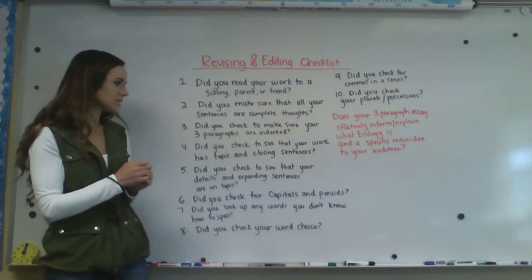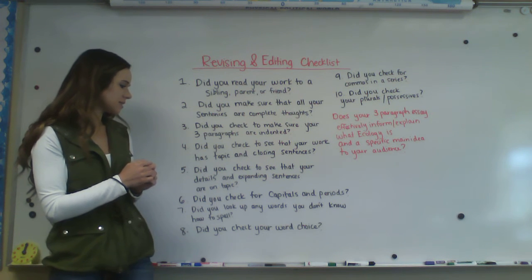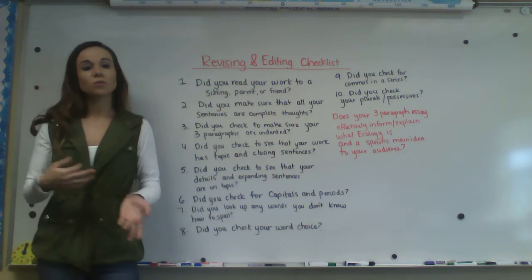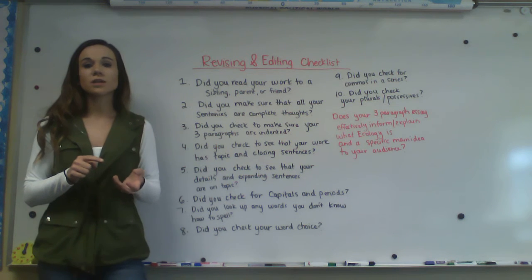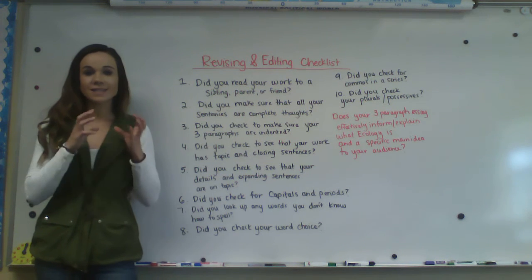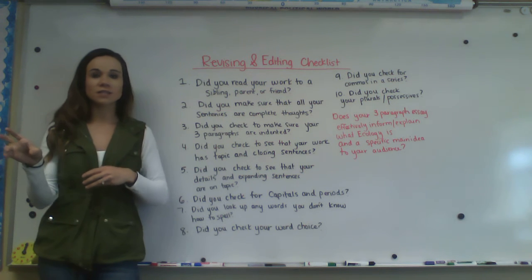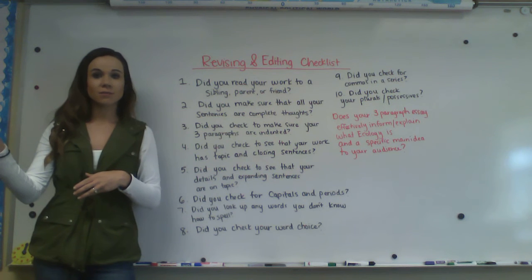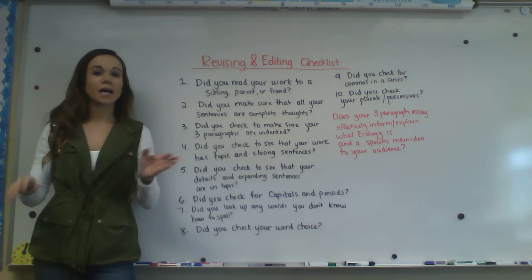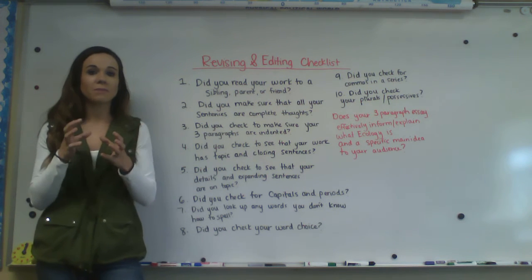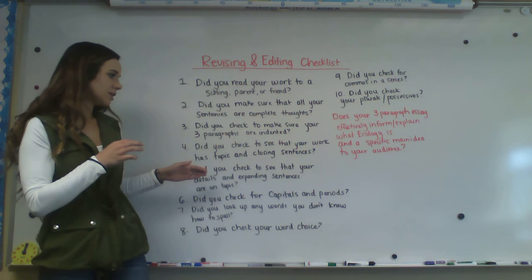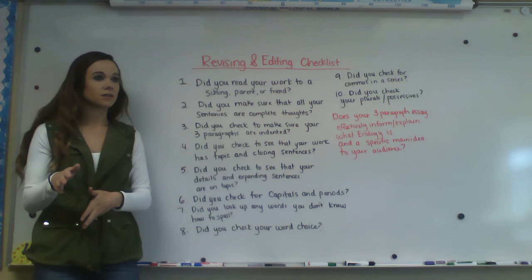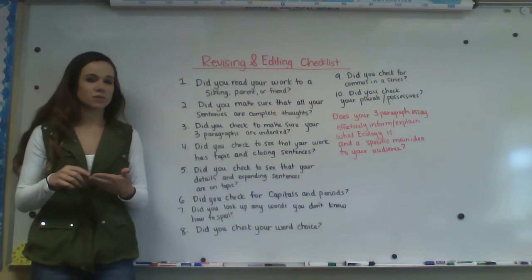Number five: did you check to see that your details and expanding sentences are on topic? For example, I wrote about the roles of consumers, decomposers, and producers. I stayed on that topic. I didn't talk about food chains, I didn't talk about the energy pyramid, I didn't talk about a random ecosystem like the beach or the woods. I stayed on my topic. So I want to make sure that my details and expanding sentences stay on the topic of the consumers, decomposers, and producers.